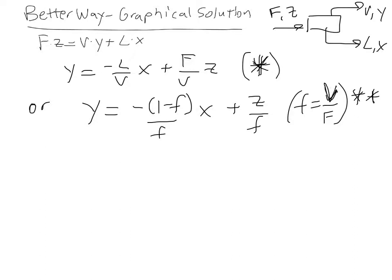And big V here is the flow rate of the vapor. Big F is the flow rate of the feed. And little f is just a parameter which is defined as big V over big F. Right here, so that's our little f parameter.